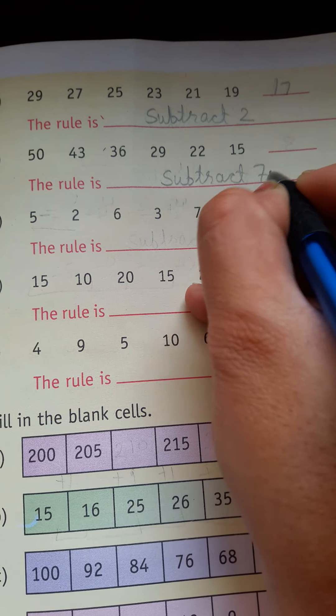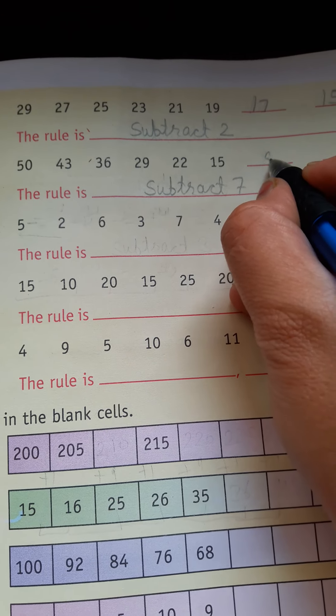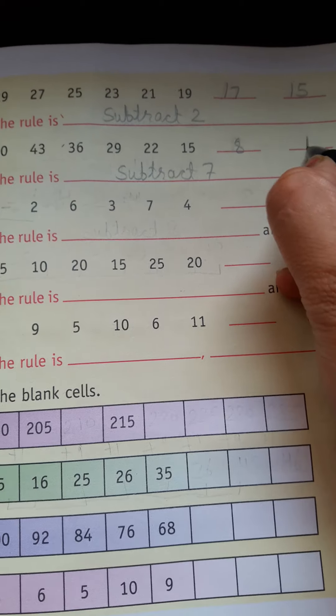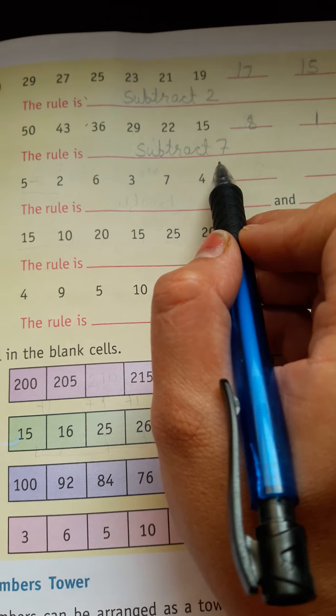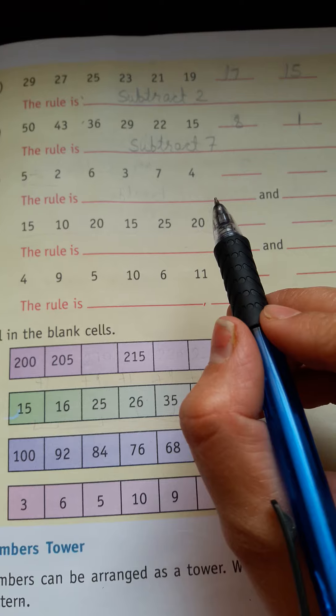15 minus 7 is 8, and 8 minus 7 is 1. What will it be? The rule is subtract 7. Now we have two lines and two rules follow.